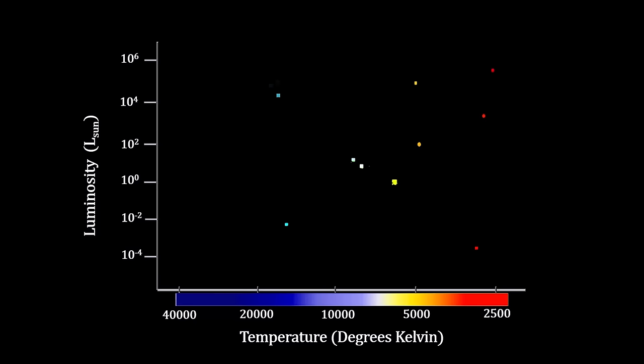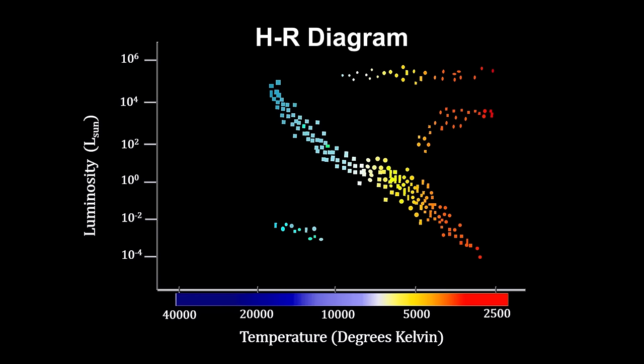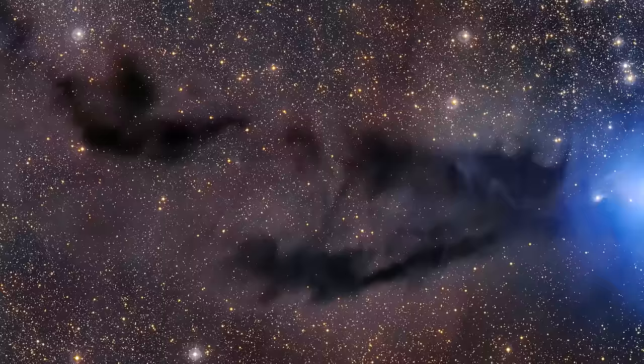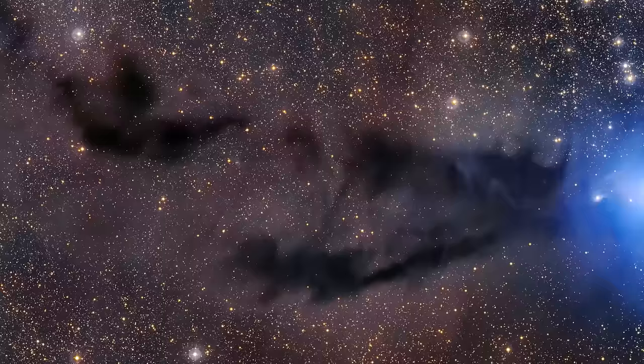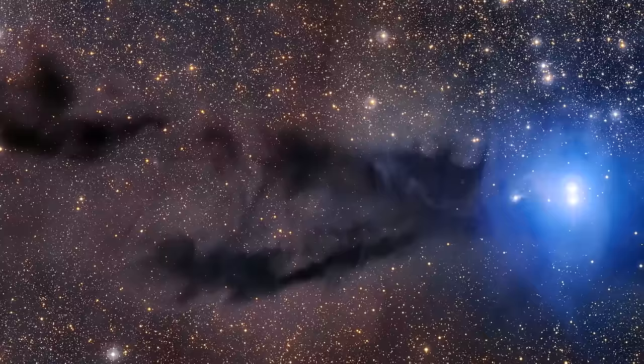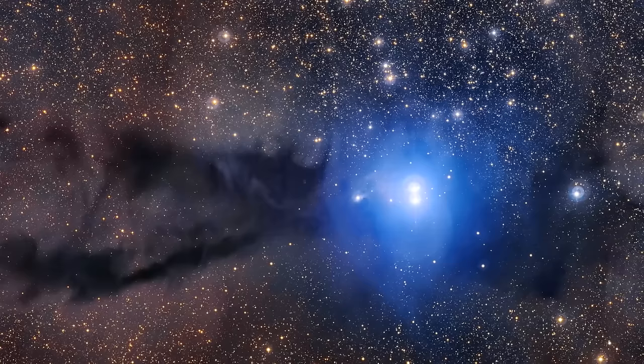The HR diagram presented a stunning visual representation of stellar properties. Stars on the diagram fell into distinct regions, revealing evolutionary trends and allowing astronomers to classify stars based on their life stages. The main sequence, where stars spend the majority of their lives, ran diagonally across the diagram. This sequence became a stellar highway guiding astronomers through the life cycle of stars. Observing the HR diagram, astronomers witnessed the diverse trajectories that stars could take, from the humble dwarfs to the luminous giants. The diagram became a cosmic atlas mapping out the vast realm of stellar diversity.